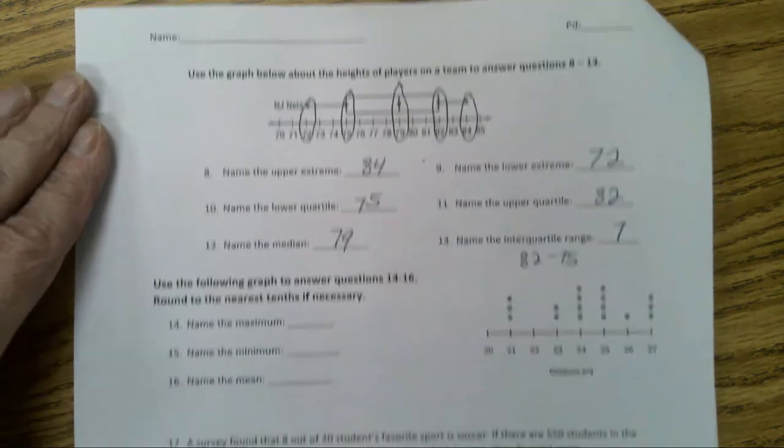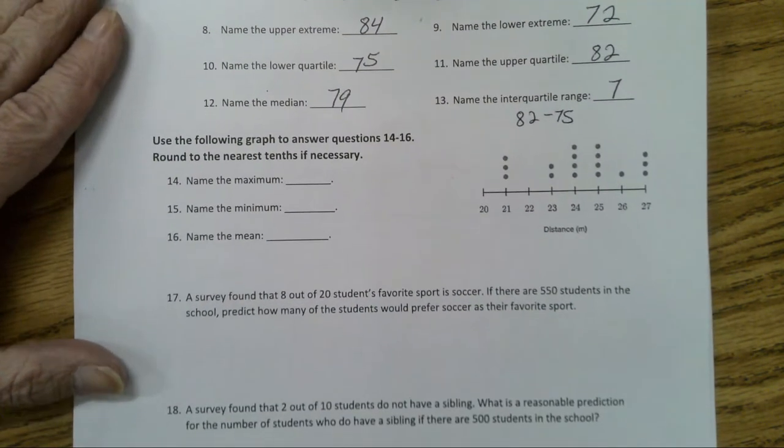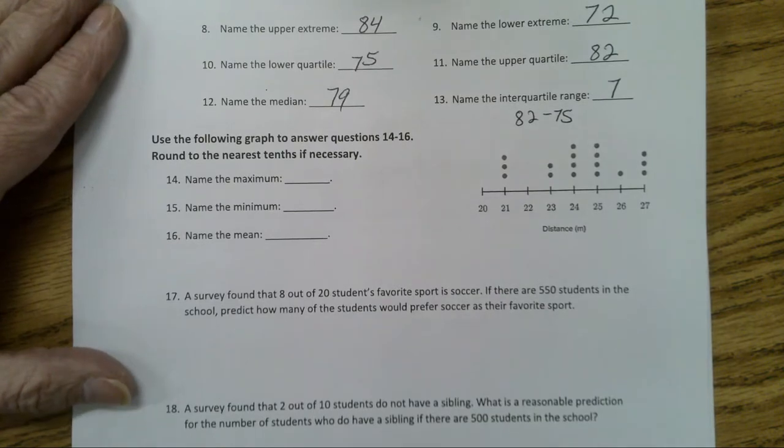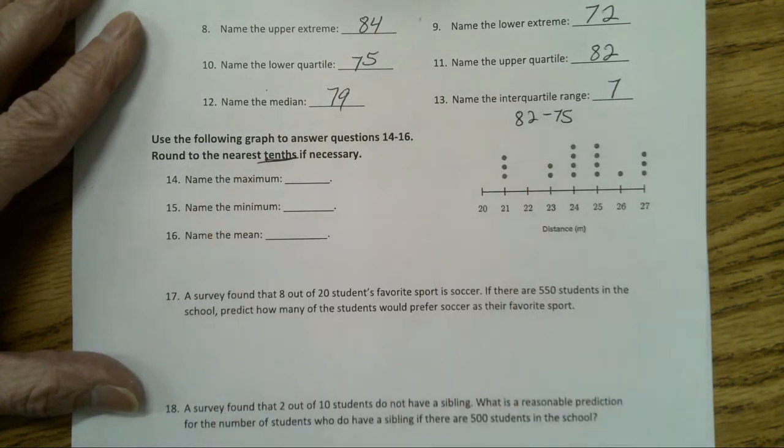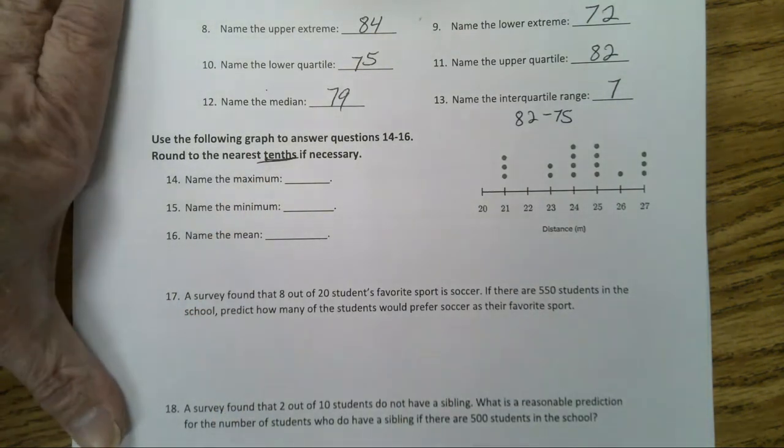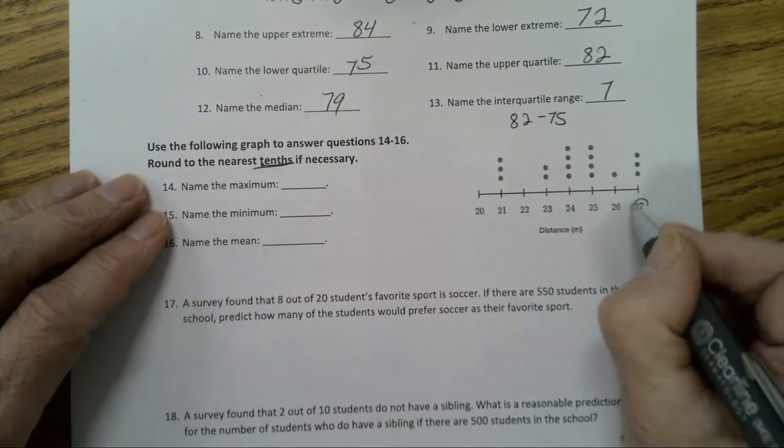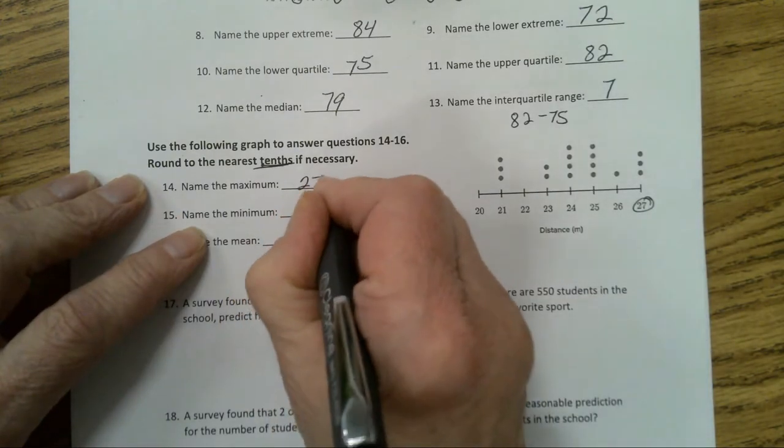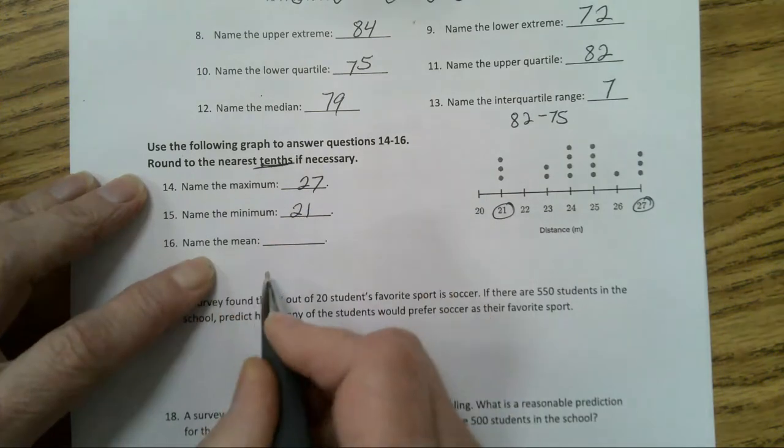Now let's go on to the next section. Use the following graph to answer questions 14 to 16. Round to the nearest tenth if necessary. The maximum value on this is 27. And the minimum value, 21. And the mean.